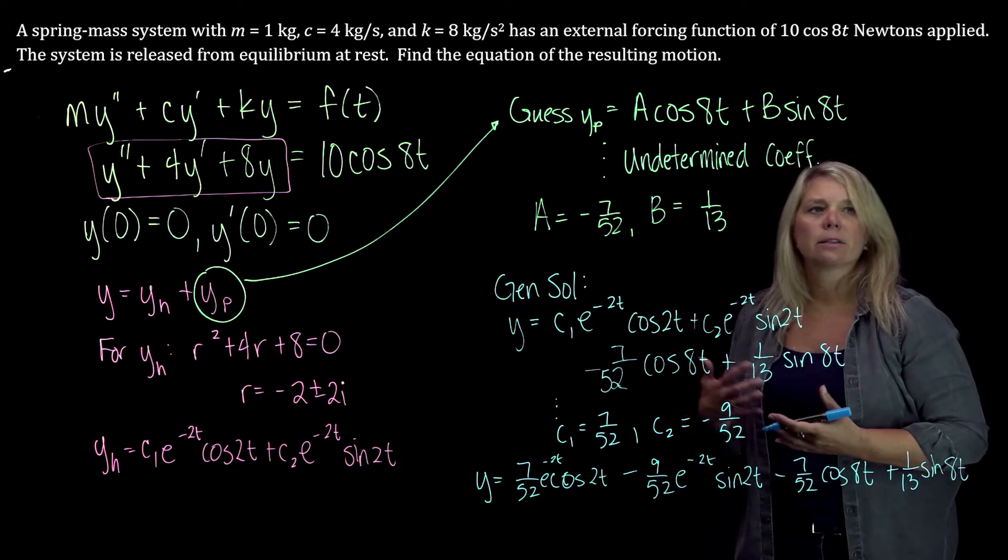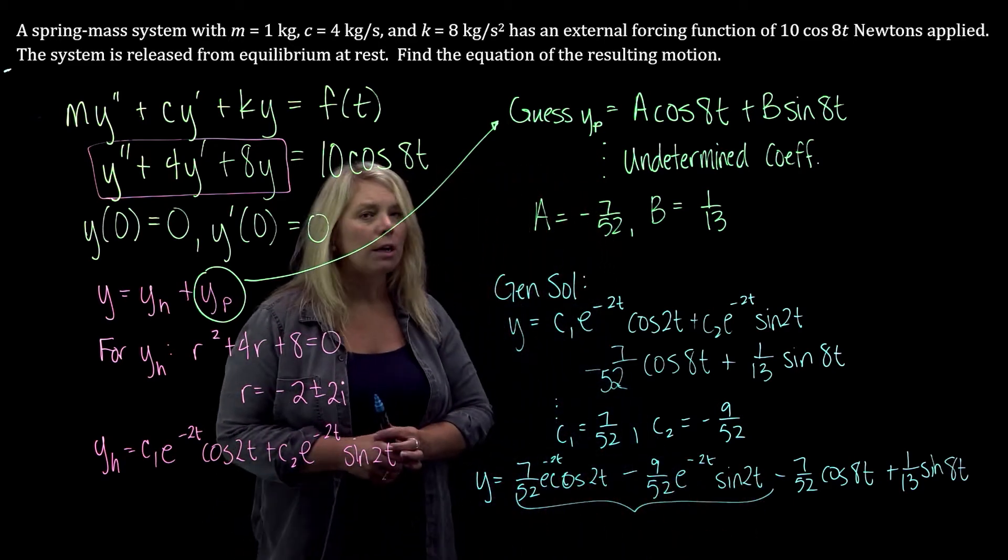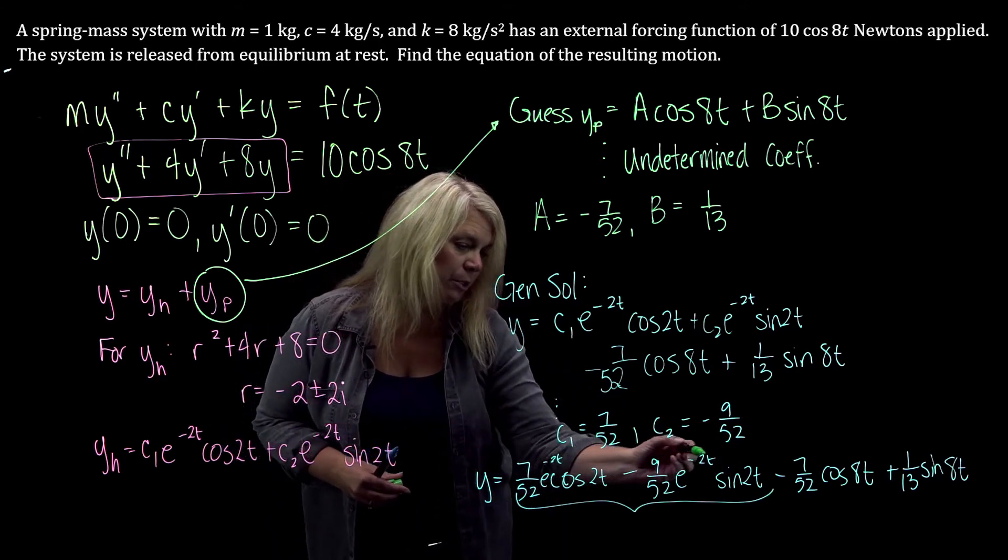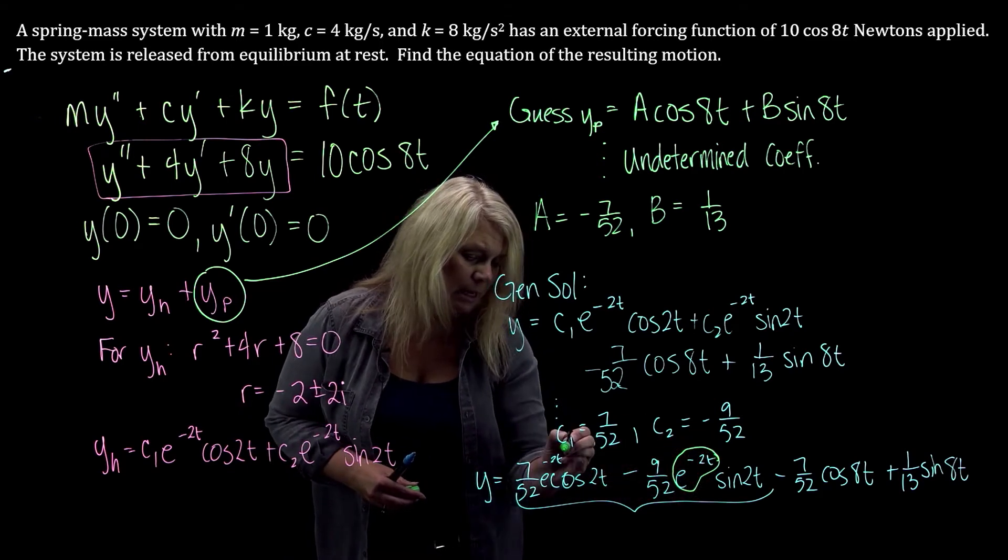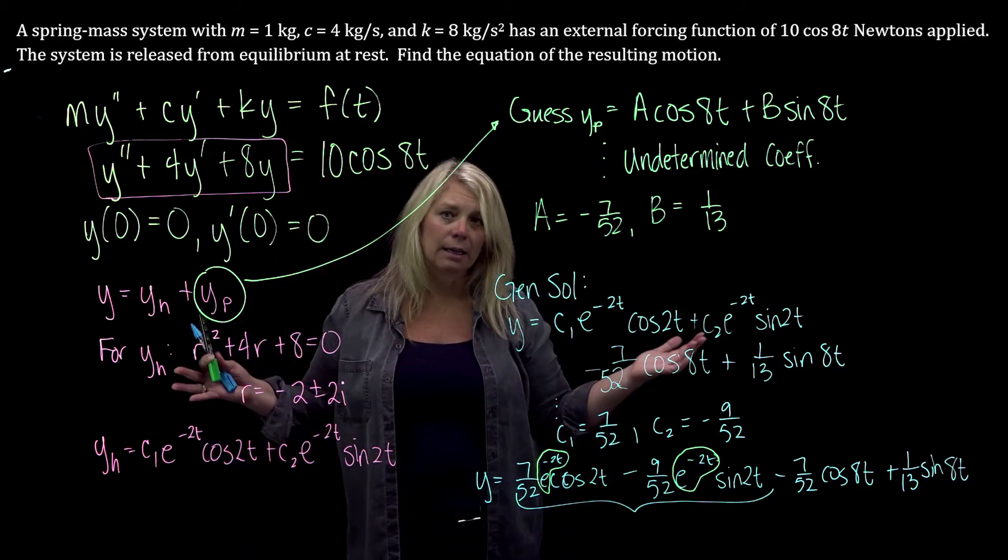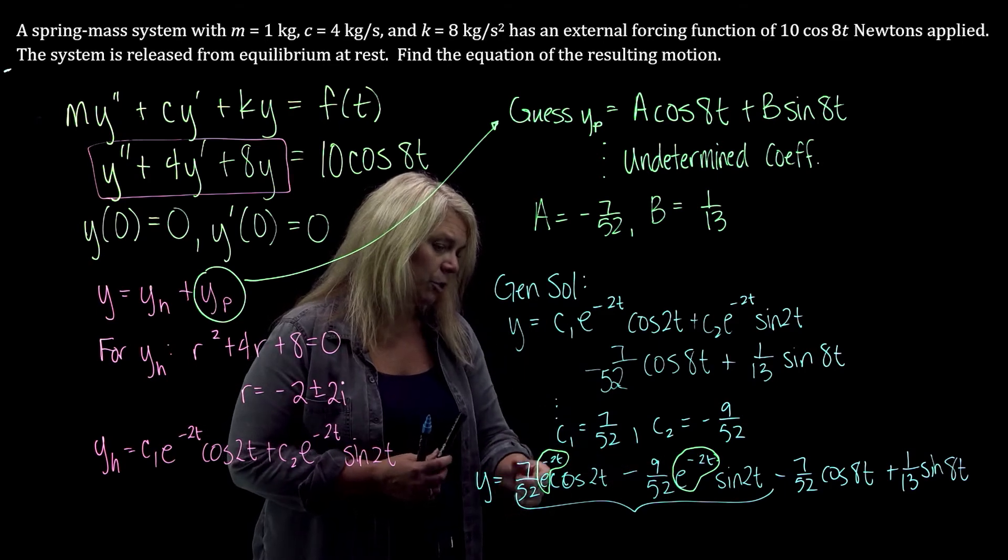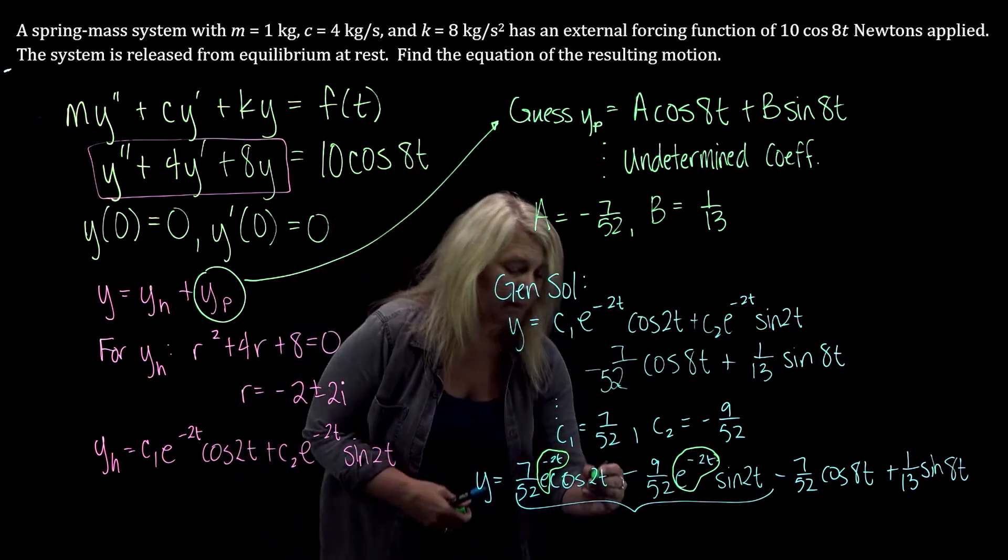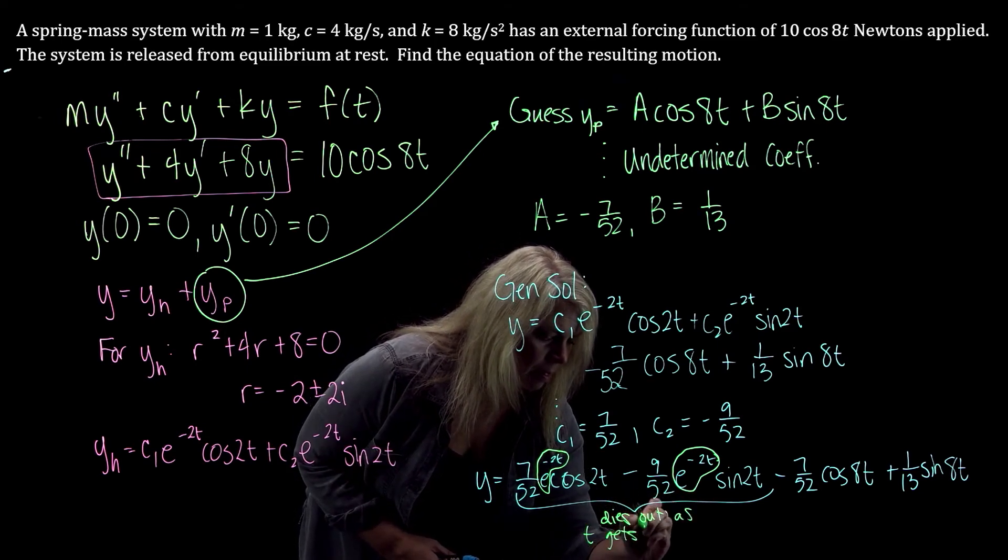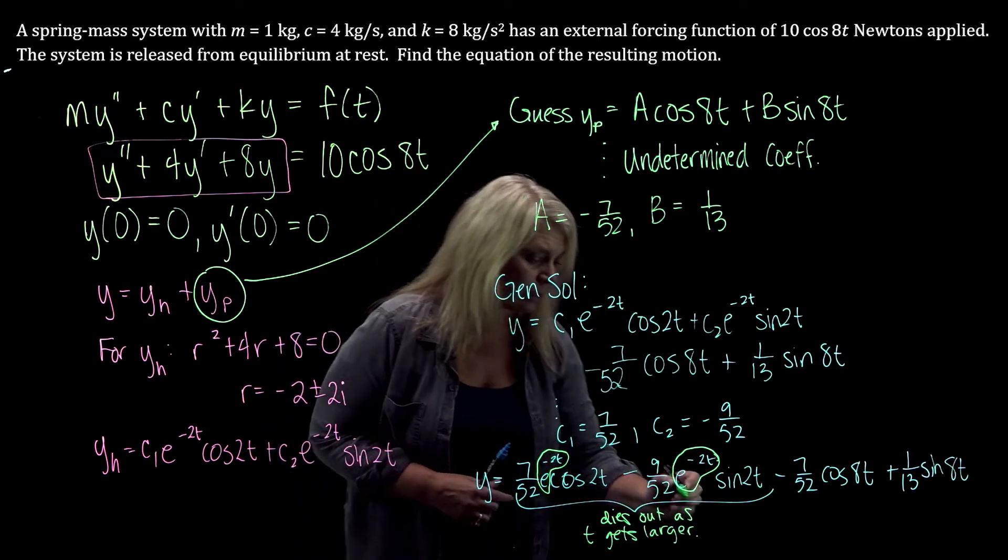Alright, so I want to talk a little bit about what this solution represents and what the different parts of this solution are. So this part from the homogeneous part, notice that I've got periodic motion caused by the sine and cosine function, but with a decreasing amplitude. This e to the negative 2t, that is a coefficient on both that cosine and sine term, is going to approach 0 as t gets larger. So as t goes to infinity, but it will also get close to 0 pretty fast. So this part of the solution is going to die out fairly quickly as t gets larger. This is the part of the solution that we would call the transient solution.